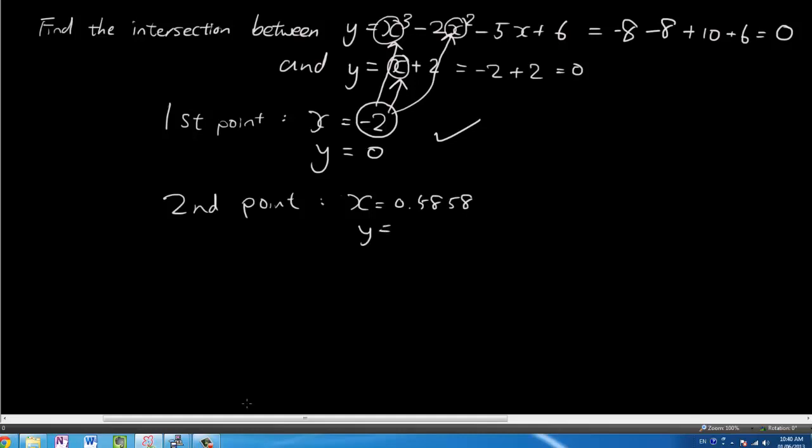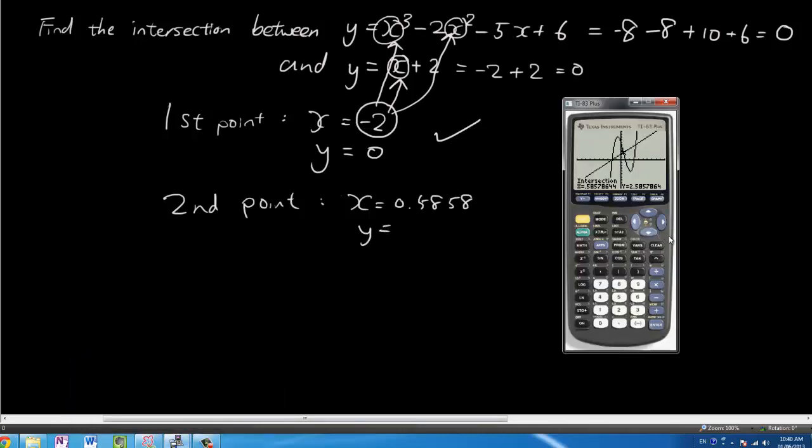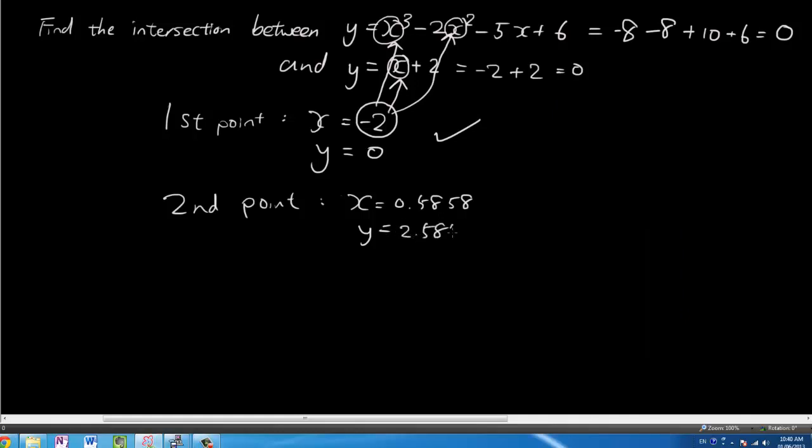And y equals 2.5858. And they're both rounded to 4dp. Four decimal places. And you're welcome to check. You can substitute x is 0.5858 into the equation and see if y returns the same value. But I won't do that right now because it might take a while.